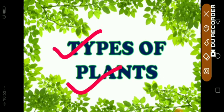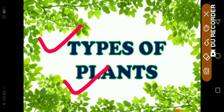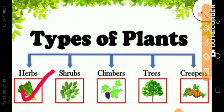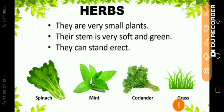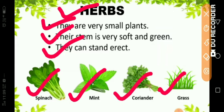Now here, types of plants. Just like we saw parts of plants, now we look at the types of plants. Plants are divided into different types according to their parts. The types of plants are: herbs, shrubs, climbers, trees and creepers. The first type is herbs. They are very small plants, the stem is very soft and green, and they can stand erect. Examples of herbs: spinach, mint, coriander and grass.